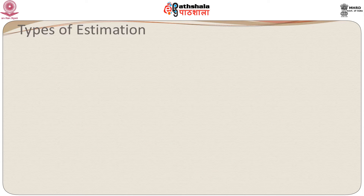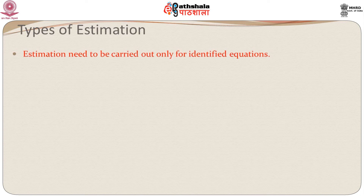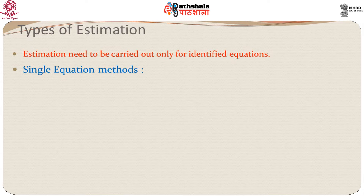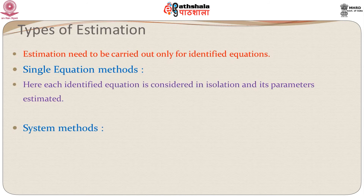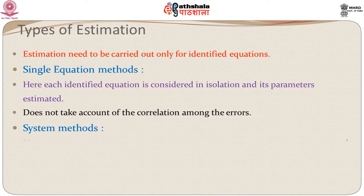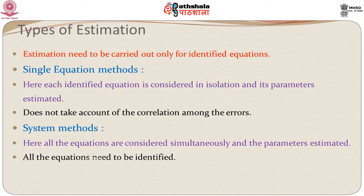This is the basic setup. Estimation needs to be carried out only for the identified equations — if an equation is not identified, we do not carry out its estimation. Broadly, there are two methods of estimation. The first is the single equation method, and the second is the system method. In the single equation method, each identified equation is considered in isolation and its parameters estimated.